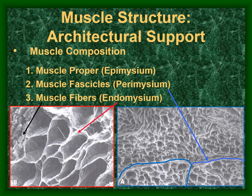There are subdivisions of muscle fibers within a muscle called fascicles. The muscle fascicles are surrounded by a connective tissue envelope called a perimysium, as outlined in blue in the photo on the lower right.